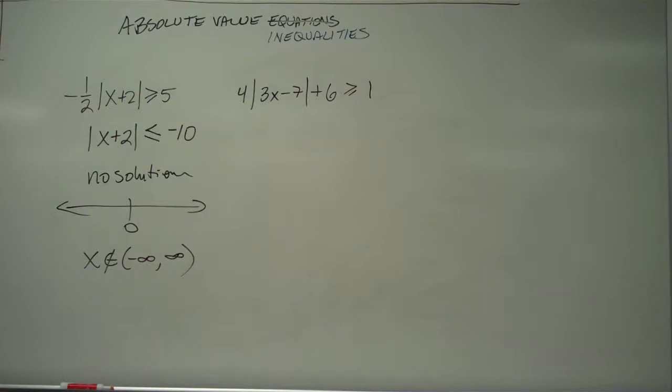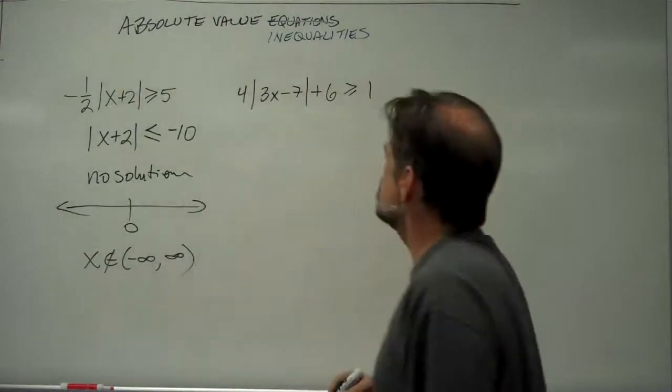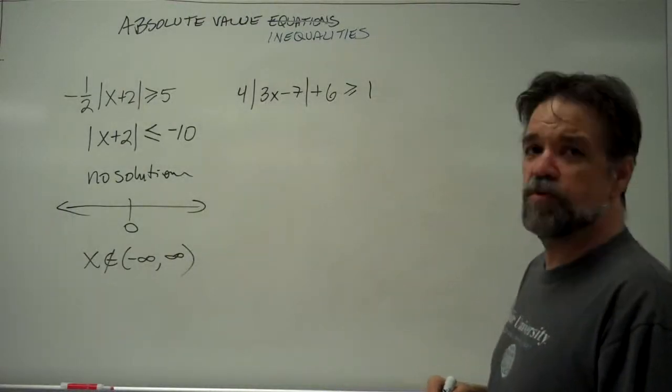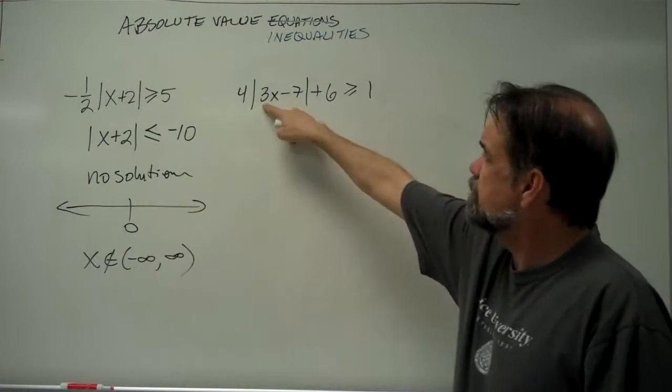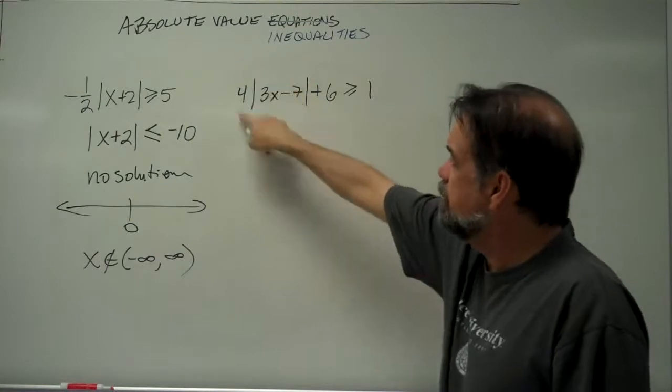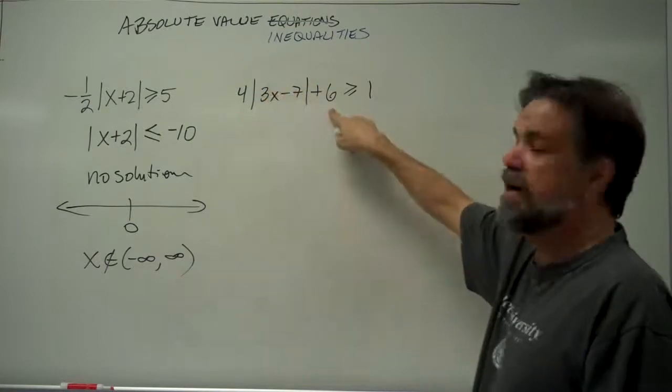So, now let's look at this one. Four times the absolute value of 3x minus 7 plus 6 is greater than or equal to 1. Okay, so what's happening to x? Multiply times 3 minus 7, then taking the absolute value, then multiply times 4, then adding 6. So, quite a bit.